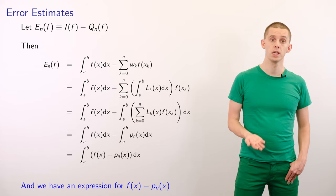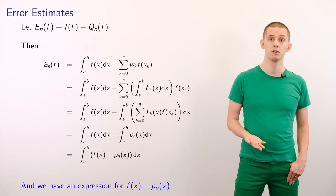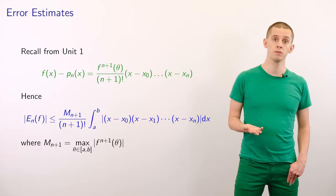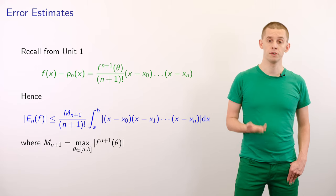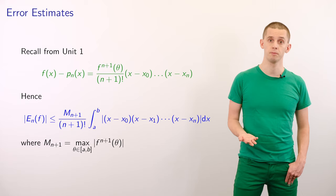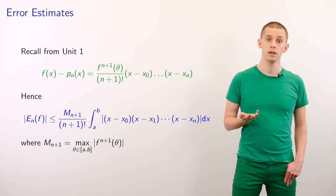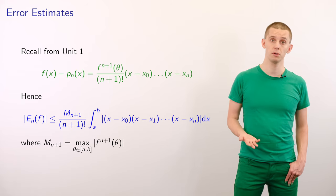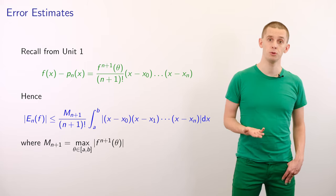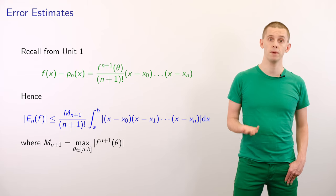This is a useful perspective because we've already derived an expression for f of x minus pn of x. In unit 1 of the course we showed that f of x minus pn of x equals the n plus 1 derivative of f evaluated at some point theta over the interval, divided by n plus 1 factorial, multiplied by the product x minus x0, x minus x1, up to x minus xn. Substituting this into our expression for en, we find that the magnitude of en of f is less than or equal to m_{n+1} over n plus 1 factorial, times the integral from a to b of the magnitude of the product x minus x0 through x minus xn, where m_{n+1} is the maximum over the interval from a to b of the magnitude of the n plus 1 derivative.